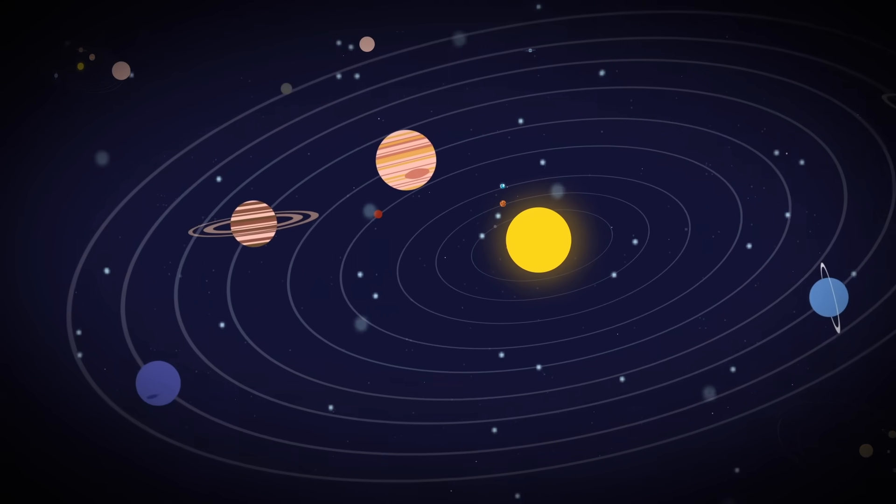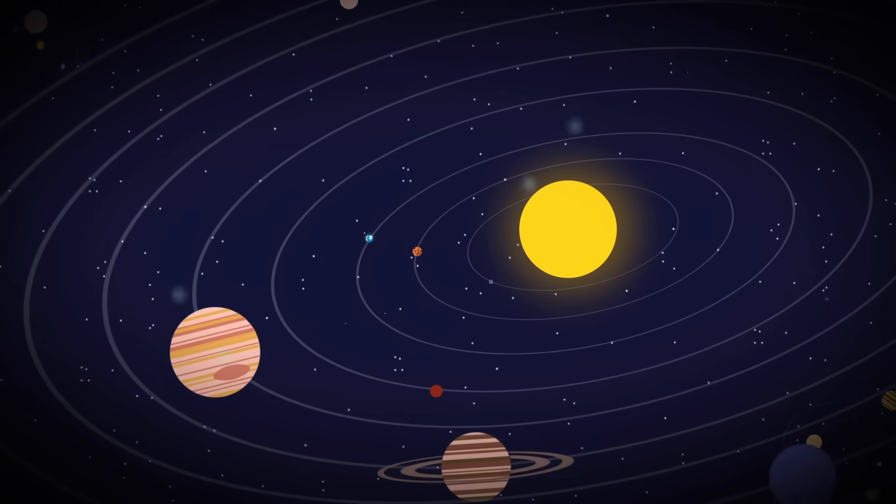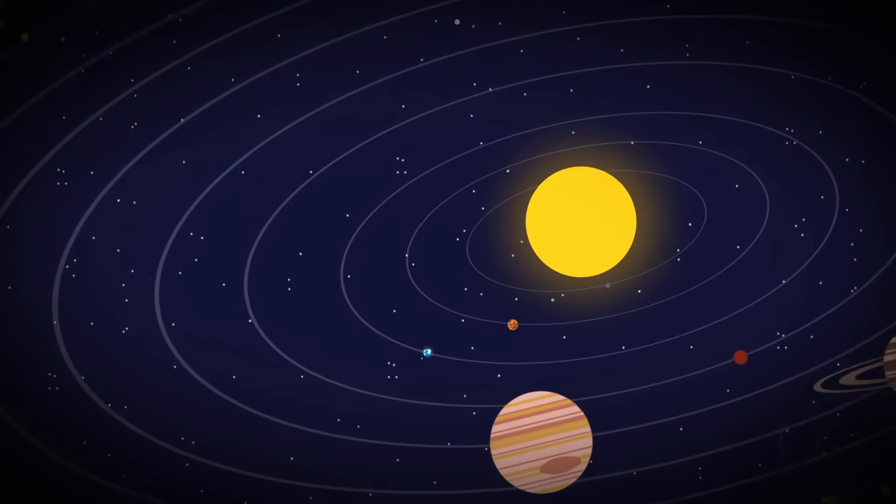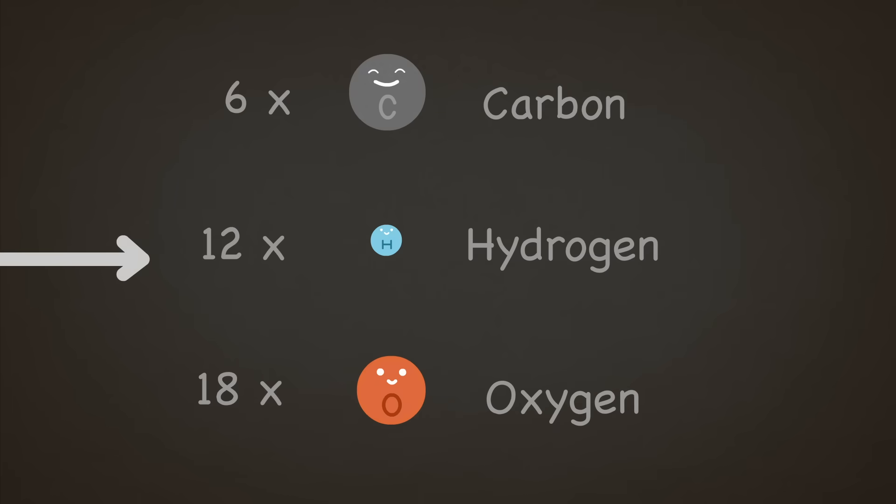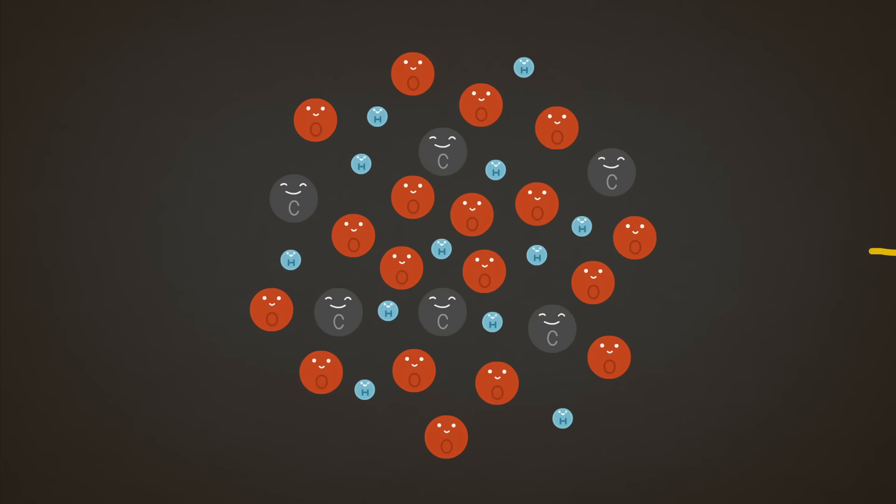The universe, to the best of our knowledge, is an isolated system. But before we get to that, let's look at a much smaller and simpler one. Here we have six carbon atoms, 12 hydrogen atoms, and 18 oxygen atoms. With a little energy, our molecules can really get moving.